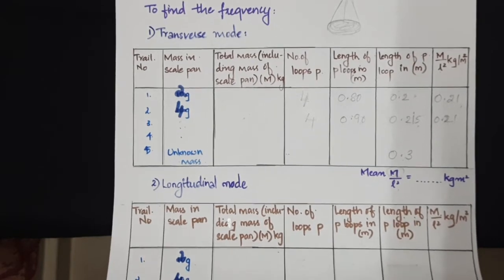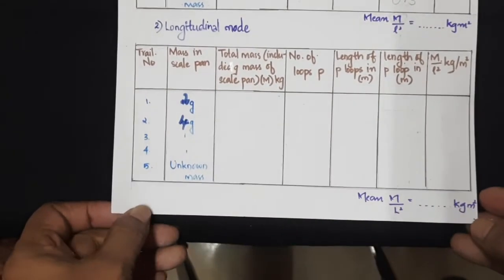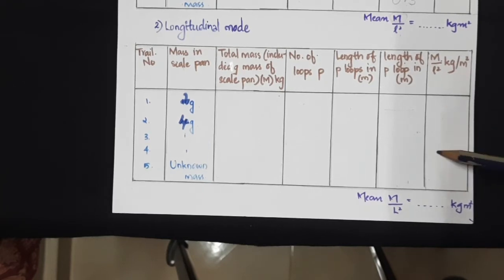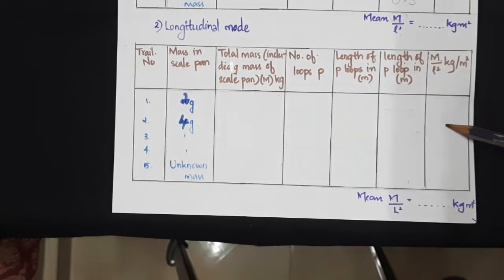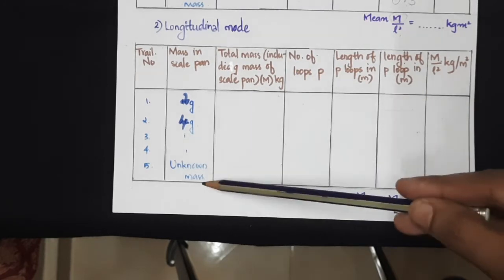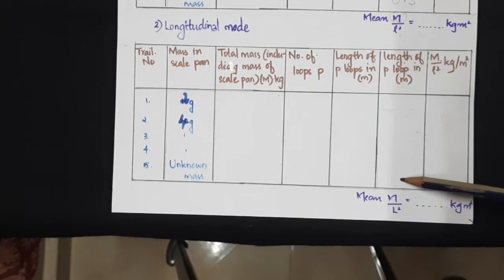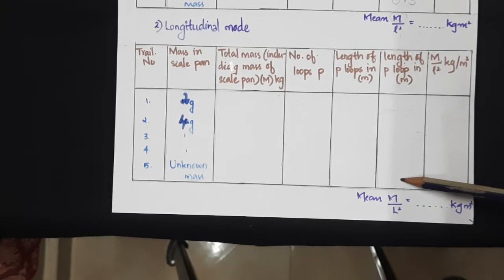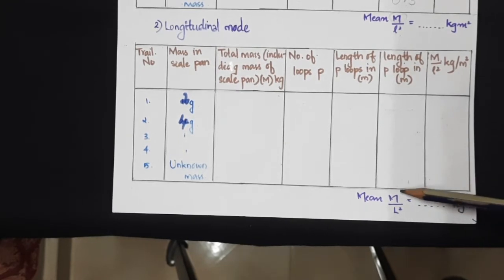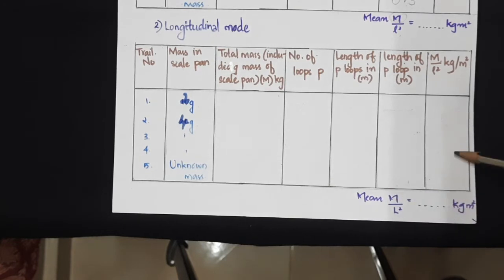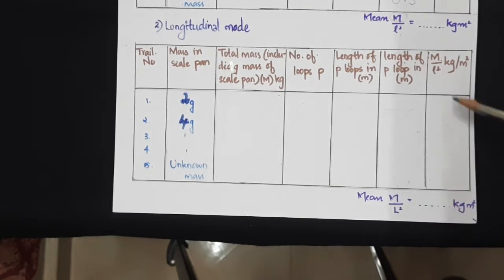The same approach is applicable to the longitudinal mode. You would have already obtained a constant value for m by l square using the known mass. With the unknown mass, find out the loop length for one loop and back-calculate the unknown mass using this constant value of m by l square.